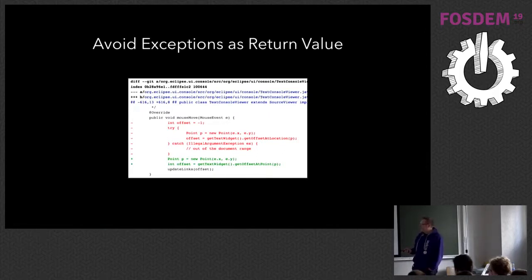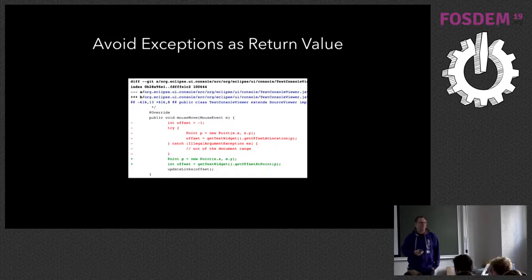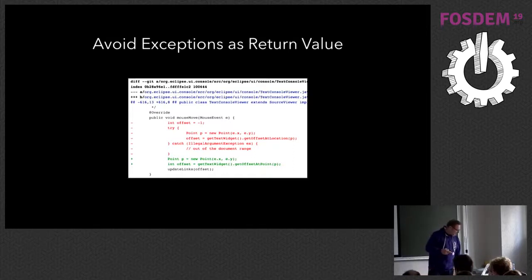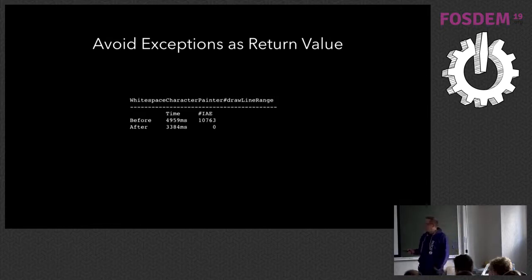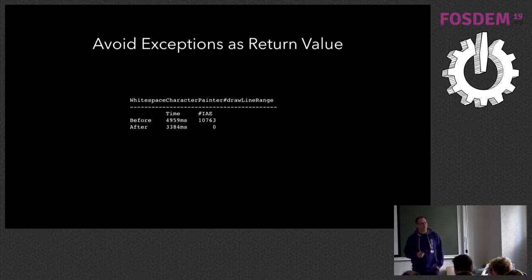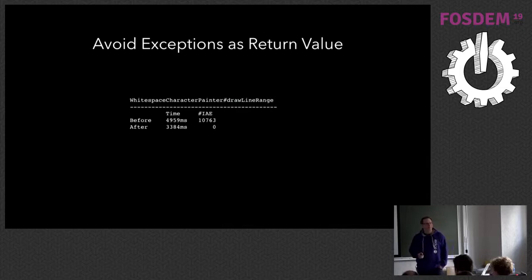We introduced a new API method that does the same thing but returns a negative value in the case there's no return value. The effect: before the change, 10,000 IllegalArgumentExceptions were thrown. We saved 1.6 seconds of processing time just by changing that. Small changes make an effect.